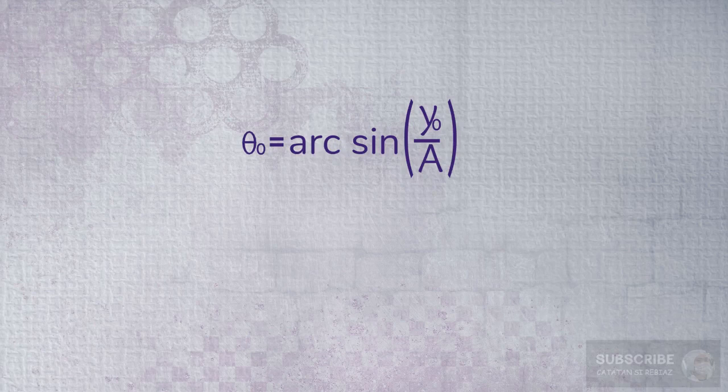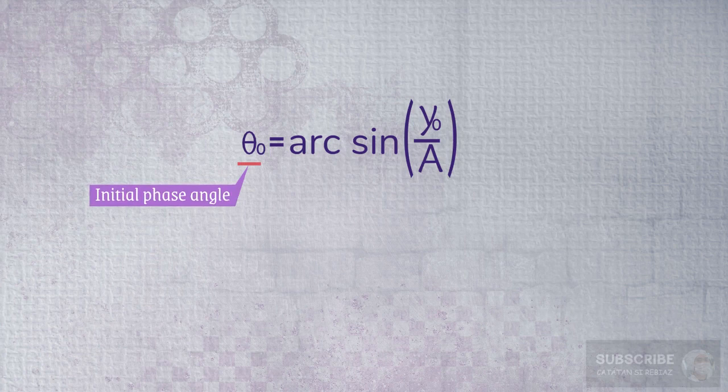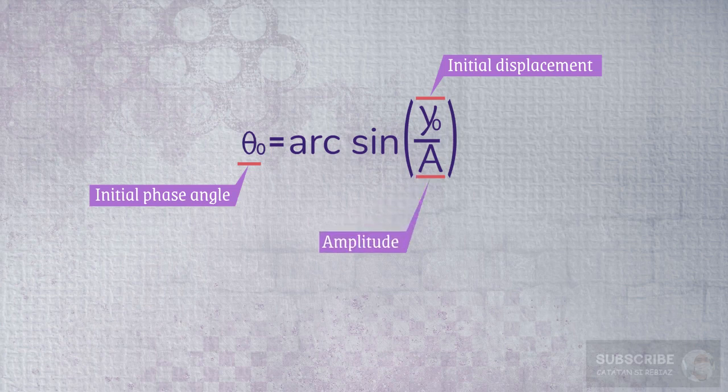Mathematically, the initial phase angle can be calculated by the equation theta zero is equal to arc sine y zero over a. Where theta zero is the initial phase angle, y zero is the displacement at t equals zero second or the initial displacement, and A is the amplitude.